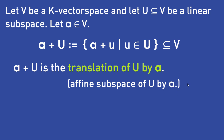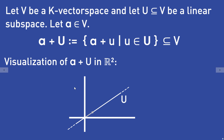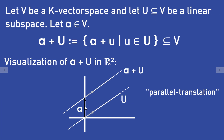In R2 we can visualize such sets a plus U nicely. Let's assume we are in the space R2 and our subspace U is a line with a given basis vector. Let a be some vector. The set a plus U is then the parallel translation of the line U by the vector a — so the original line U got moved parallelly by the vector a.